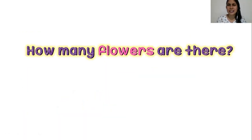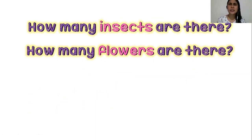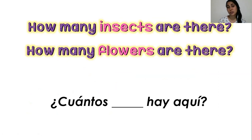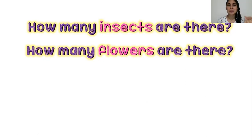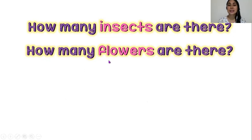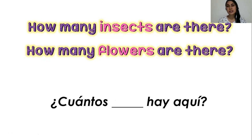How many flowers are there? How many insects are there? What do these questions mean? ¿Qué significan esas preguntas que la teacher estaba haciendo? La pregunta significa ¿cuántos hay aquí? How many insects? How many flowers? How many teachers? How many students? How many parents? Siempre preguntamos con plural — en inglés también tenemos que hacerlo en plural. Y la respuesta significa: hay tantos. There are tantos.